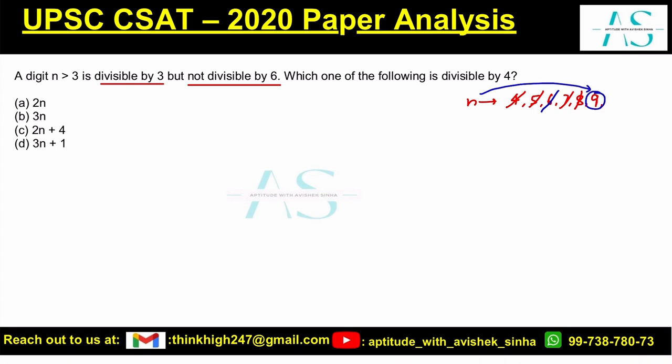Based on all three conditions, I can predict the value of n as 9 definitely, because no other values are left. Now, which of the following is divisible by 4? Let's solve it.